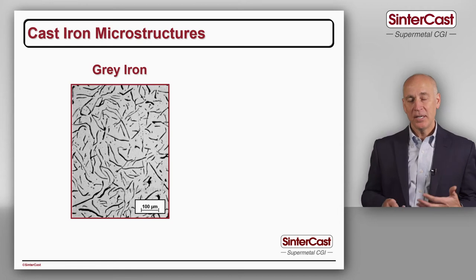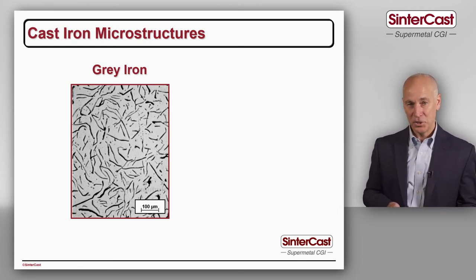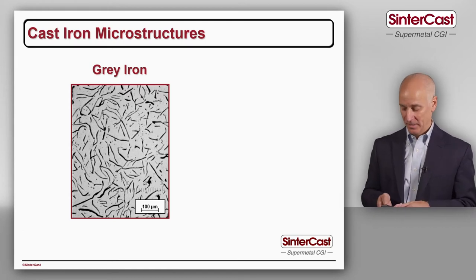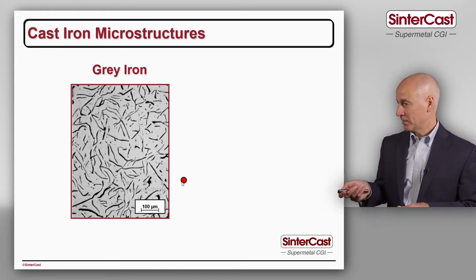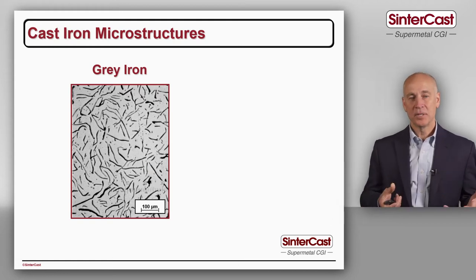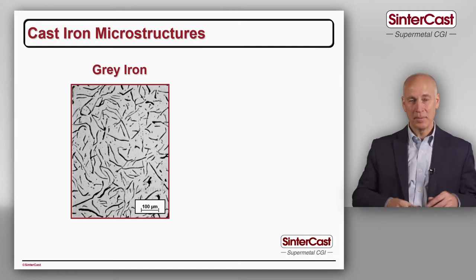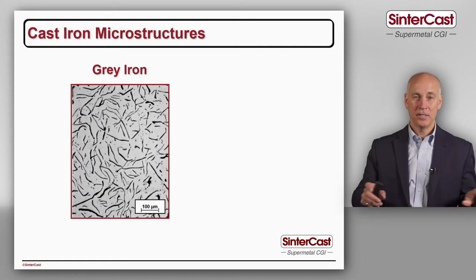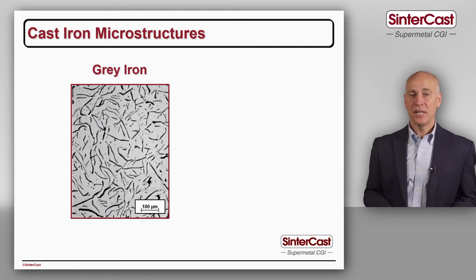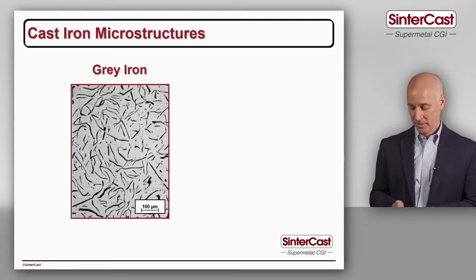Unfortunately, each of the graphite particles is an opportunity for a crack to initiate and a crack to propagate. A crack could travel along the surface of a graphite particle and when it comes to the end it only has to go through a little bit of iron before it finds neighboring graphite particles and continues to spread. That's the nature of a brittle material — like the windscreen in your car, once a crack starts you can't stop it.